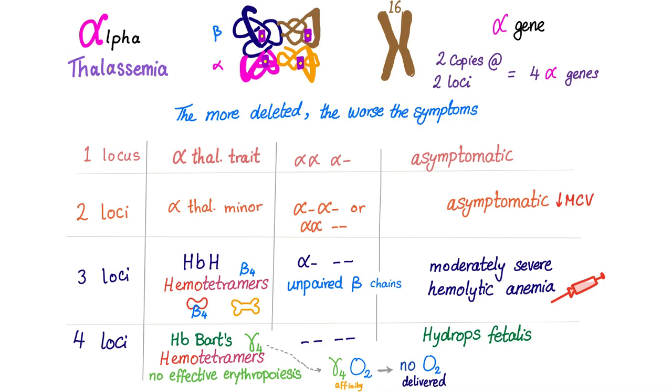If only one locus is deleted, it's called alpha thalassemia trait. And it will have one of them will be alpha alpha, the other will be alpha negative. So since we have four genes, it will be like this: two of them are normal and these others, one has alpha and one is negative. What are the symptoms? This patient or this kid is completely asymptomatic.